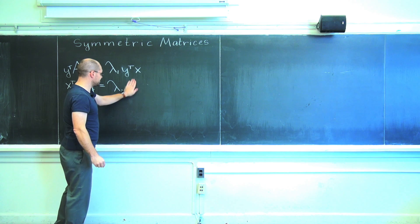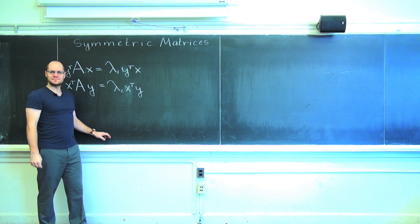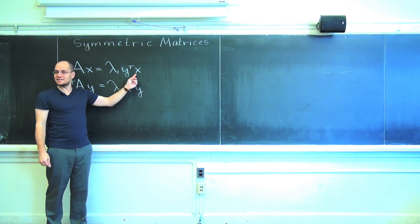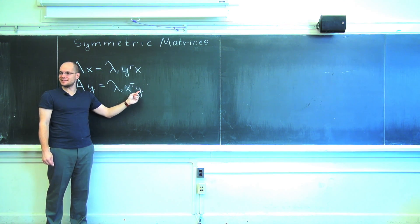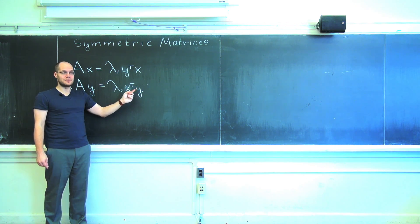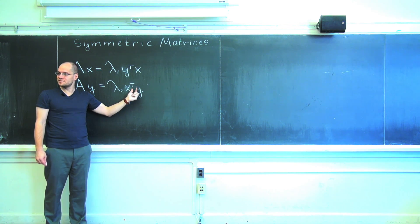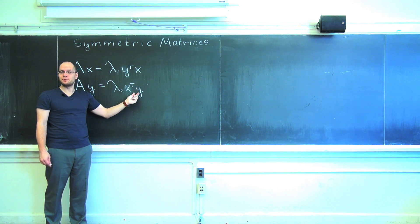Okay. This of course I'll multiply by X transpose and this becomes X transpose Y. So this is X dotted with Y and this is X dotted with Y. This is a number. If this looks to you like these two numbers are different, just take the transposes of both sides.